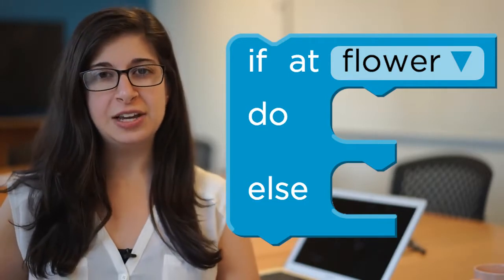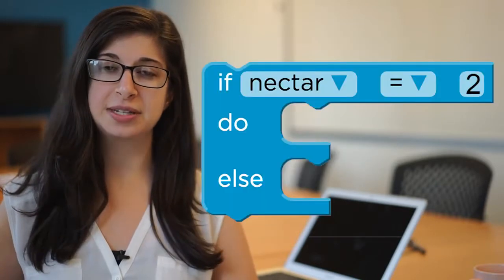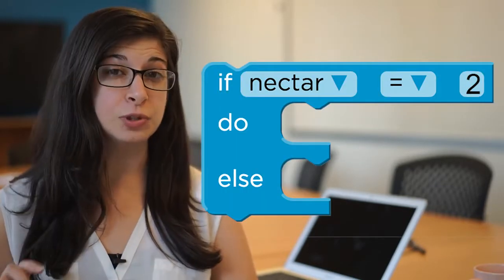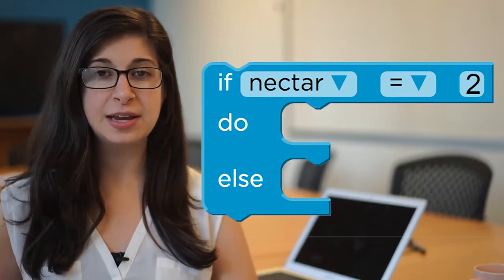The top of our if-else block says if at flower. But the top of our block could say other things like if nectar equals two or if there's a path ahead. And our block will behave in the same way.